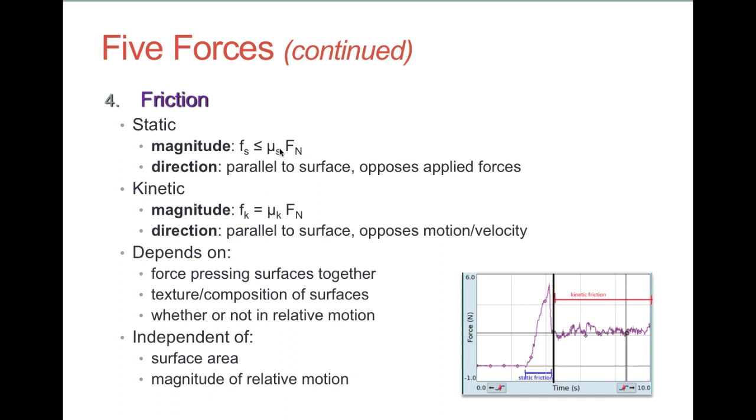Kinetic friction has a similar structure, except now it's equal because it's a constant. It has a different coefficient because, generally speaking, this number right here, the coefficient of kinetic friction, is less than the coefficient of static friction. That is not always the case. There are substances where the kinetic is actually larger than the static. That is a little unusual, but these are both numbers we just do experiments on and measure. And like the static friction, the kinetic friction is directly proportional to how hard the surfaces are pressed together. And like static, it's parallel to the surface, only now it's going to oppose whatever motion or velocity they have.